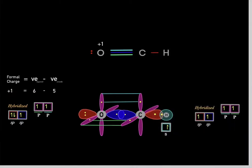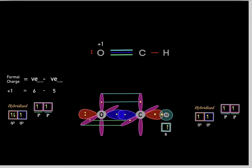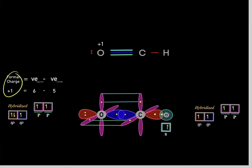Also, a correction: earlier I said oxygen has five valence electrons, but oxygen is supposed to have six valence electrons based on its location in the periodic table. Because this oxygen only has five valence electrons, it has a formal charge of positive one. So this oxygen carries a +1 charge.